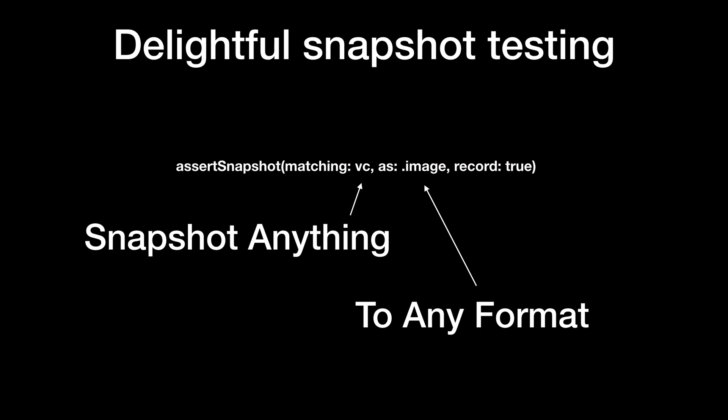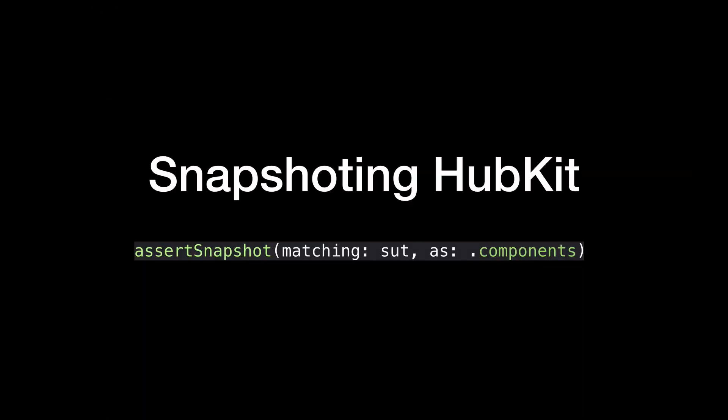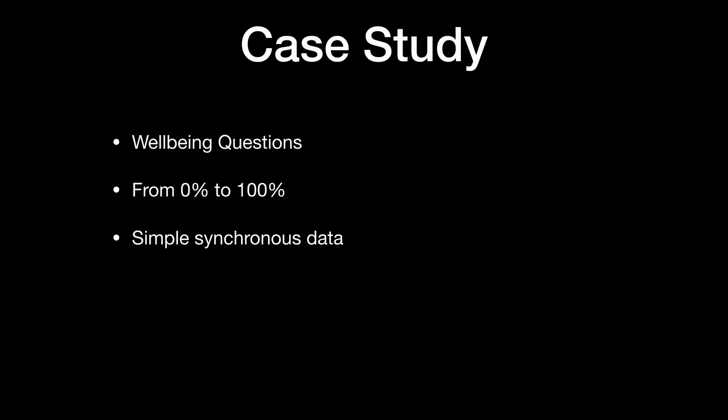This library allows us to snapshot anything — view controllers, views, data, API requests, models — and in our case we're testing our components. The crucial part is that you can snapshot to any format: as an image like screenshot testing, as a description text, or even binary format. You can create any strategy you want. I created a domain-specific snapshot strategy I call 'components' that helps by letting you pass a view model and matching its components against a snapshot.